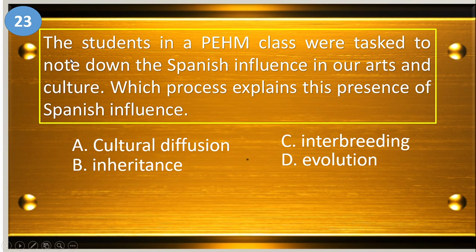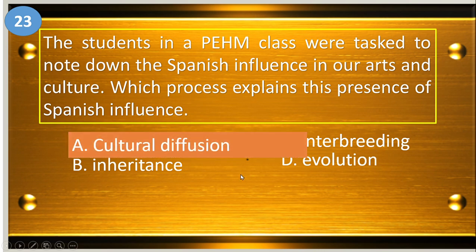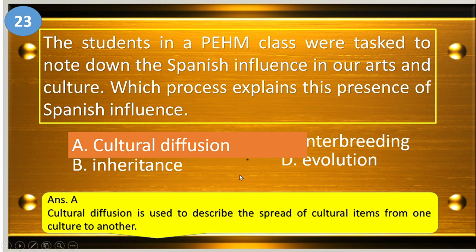Number twenty-three: students in their PHM class were tasked to note down the Spanish influence in our arts and culture. Which process explains this presence of Spanish culture? A, cultural diffusion; B, inheritance; C, interbreeding; and D, evolution. The answer is letter A, cultural diffusion.